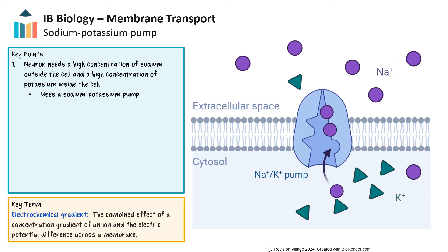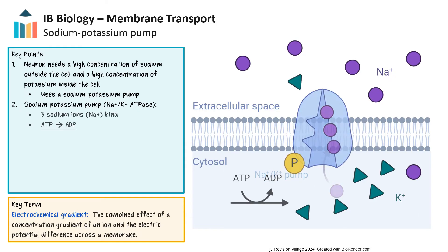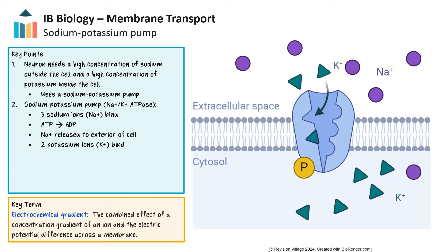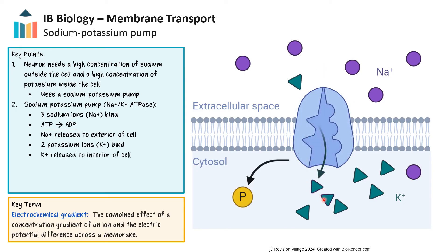By maintaining ion balance and supporting membrane potential, the sodium-potassium pump is fundamental to the physiological function of cells, particularly excitable cells like neurons and muscle cells. In the case of the sodium-potassium pump, also known as sodium-potassium ATPase, three sodium ions bind to the pump protein from the interior of the neuron. ATP converts to ADP when it releases a phosphate group through hydrolysis, which then binds to the pump. The addition of the phosphate and sodium ions causes a shift in the protein's three-dimensional shape, releasing the three sodium ions to the exterior of the cell. This shape change allows two potassium ions from the exterior to bind to the protein, causing another conformational change that releases the potassium ions to the inside of the cell.